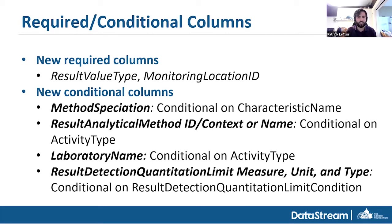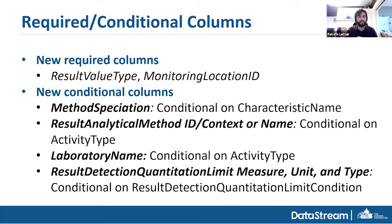We also updated result condition, limit measure, unit, and type. Previously, above and below — greater than or less than symbols — were embedded in the result value. Now we break those out into a separate column. We also added 'detected not quantified' and 'not detected' as presence/absence options. When those exist, you don't have a measure or unit because it's just presence/absence — not above or below anything. I'll show you what all of these look like in the demo.